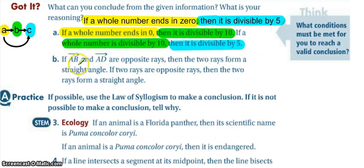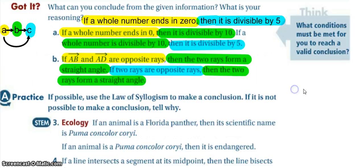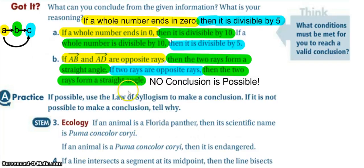Now look at B: if AB and AD are opposite rays, then the two rays form a straight angle. Think about the color coding and the conclusion we can try to make. Notice we have our initial hypothesis, then its conclusion — and then a new hypothesis with the same conclusion as before. So for B, no conclusion is possible. Always make sure you're looking for a statement to be restated right after it was stated — that did not happen here, so there is no conclusion based on the law of syllogism.